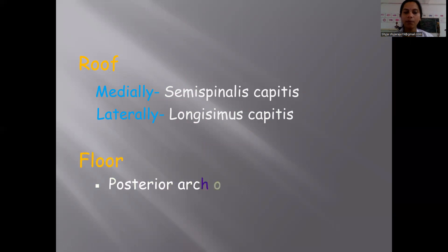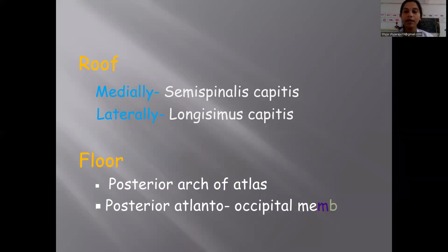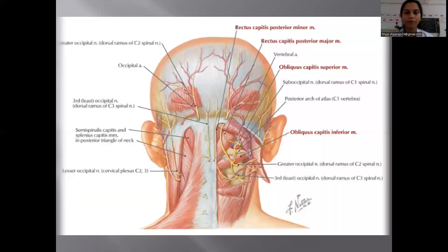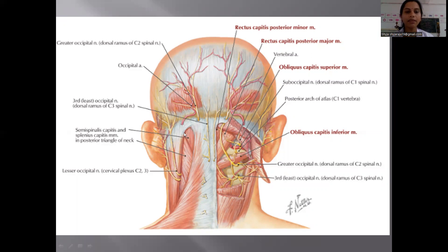The floor is formed by the posterior arch of the atlas and the posterior atlanto-occipital membrane. You can see in this picture the roof and the floor with the contents. The roof has the semispinalis capitis and splenius capitis. In the semispinalis capitis you will find one nerve — the lesser occipital nerve — along with the occipital artery.